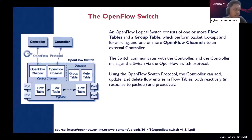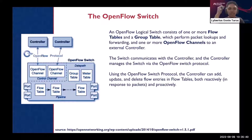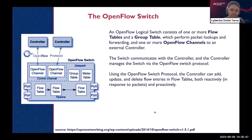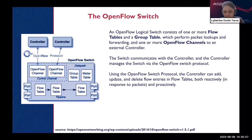Now let's go inside the OpenFlow switch and see what its logical parts are. Just to set expectations: if you try to open a forwarding switch, you won't be seeing these components as physical components. This is more of a logical representation of that switch. An OpenFlow logical switch contains what's called flow tables, a group table, and OpenFlow channels.